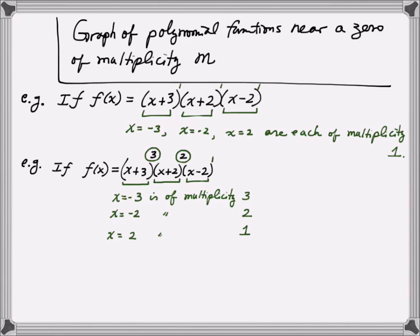The natural question is whether the graph looks similar to the polynomial with all multiplicities of one. The dominating term will be x to the sixth, because the degrees from each factor are 3, 2, and 1, which add up to a degree 6 polynomial. So it's natural to think the graph looks similar to x to the sixth, which resembles a parabola that is flatter near the origin. It turns out this polynomial shares the same end behavior as x to the sixth, but near the zeros, things look a little differently.